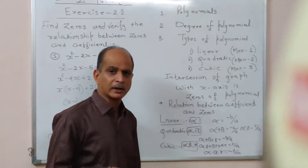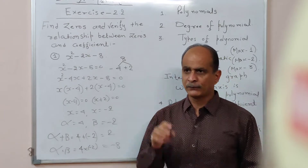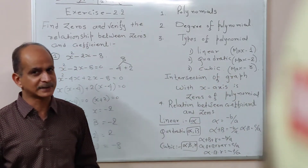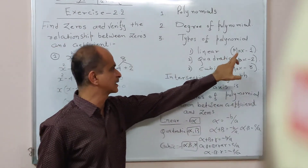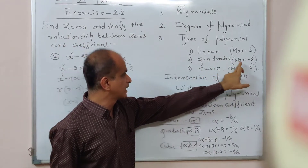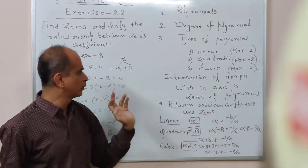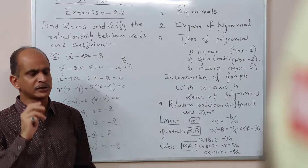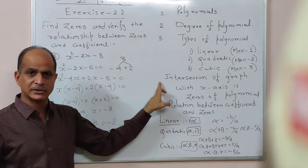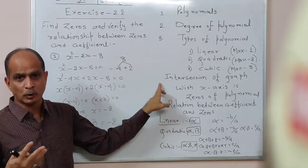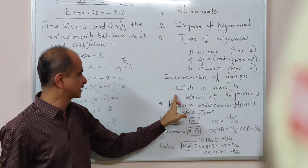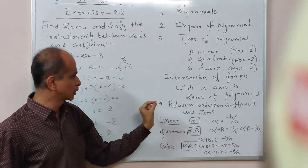We also drew the graph of a polynomial. If you draw the graph of a linear polynomial, it intersects the x-axis at one point, and that's why it has a maximum of one zero. A quadratic polynomial has a maximum of two zeros, and a cubic polynomial has a maximum of three zeros. The intersection of the graph with the x-axis is known as the zeros of the polynomial.